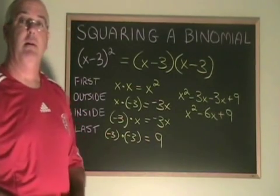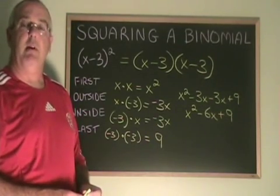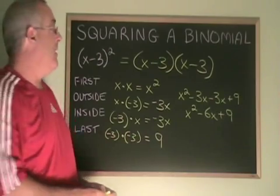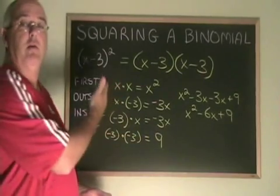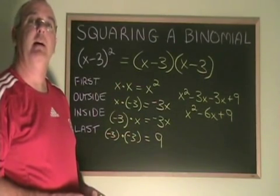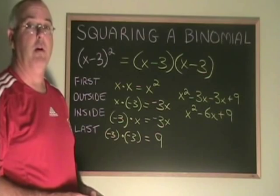Squaring a binomial is the same as multiplying two binomials. All you have to do is rewrite the expression so that it looks like two binomials multiplied, and then do the FOIL. This is not the only way of squaring a binomial.